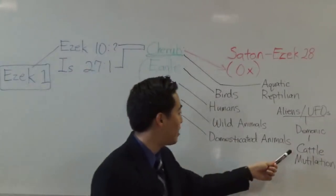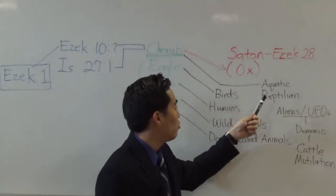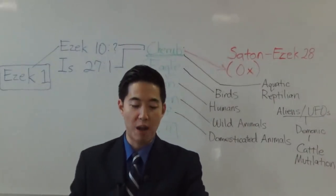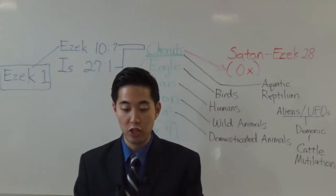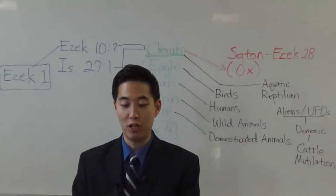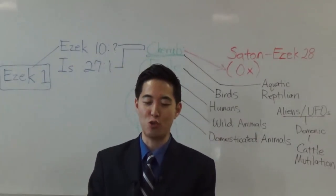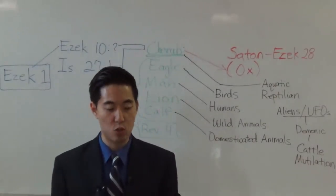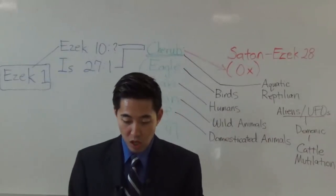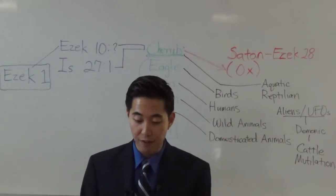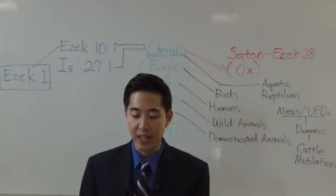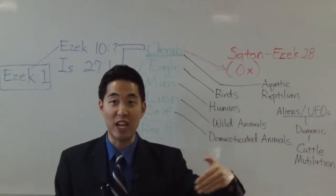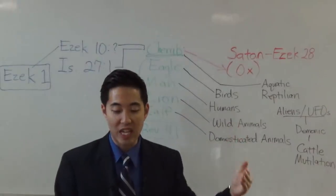Here's the thing: why would the reptilian class be likened to the cattle category? Go to Genesis chapter 1 and Genesis 3 — the Bible will give you all the answers you need. Look at Genesis 1 verse 25: 'And God made the beast of the earth after his kind, and cattle after their kind, and everything that creepeth upon the earth after his kind.' Notice that the creeping creatures are within the category with the cattle when God created.